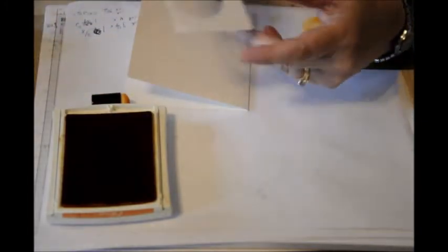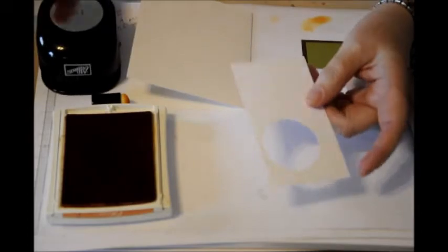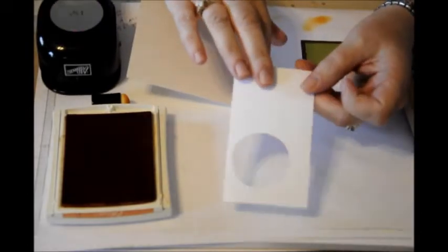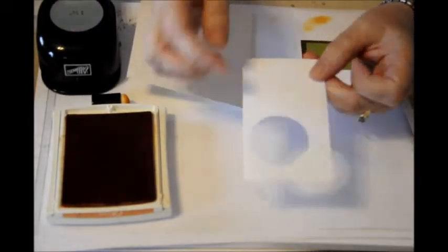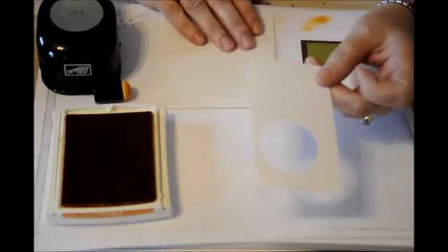For this card you're going to need the 1 and 3 quarter inch circle punch. What I did was take a scrap of white paper and punch out a circle. This is called a negative.